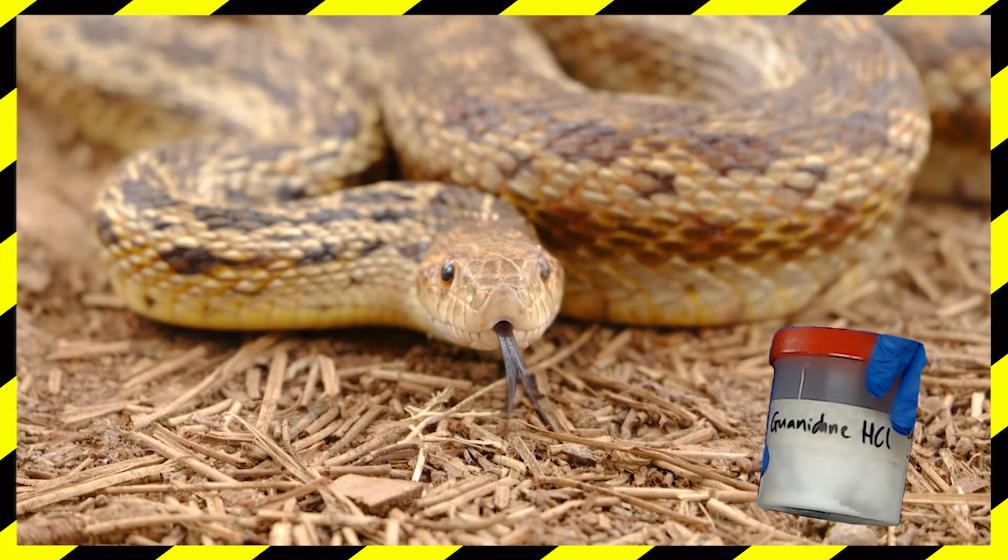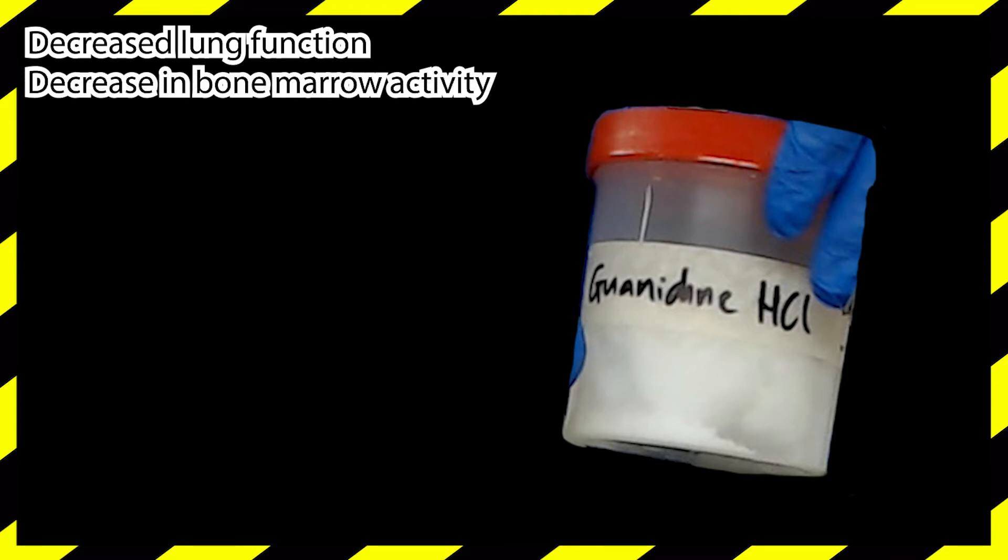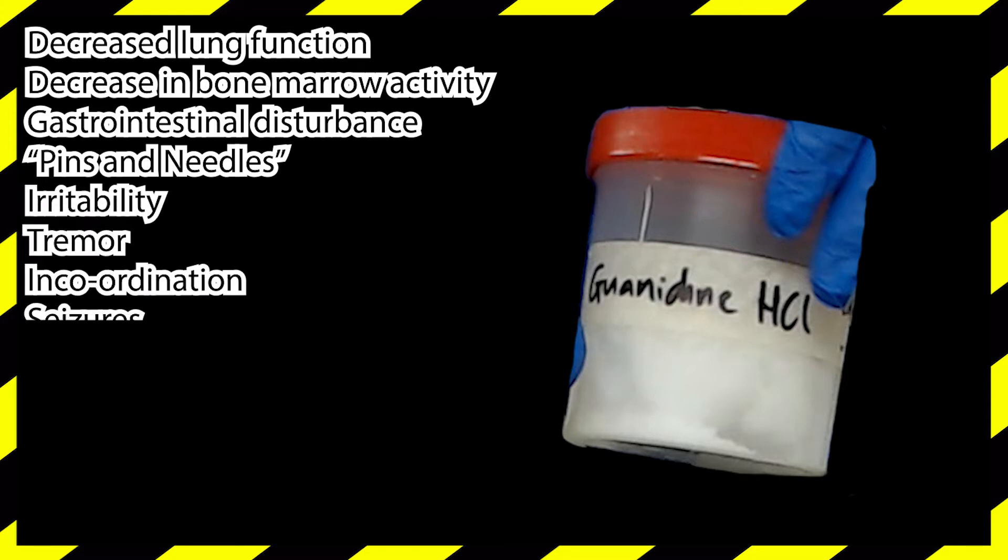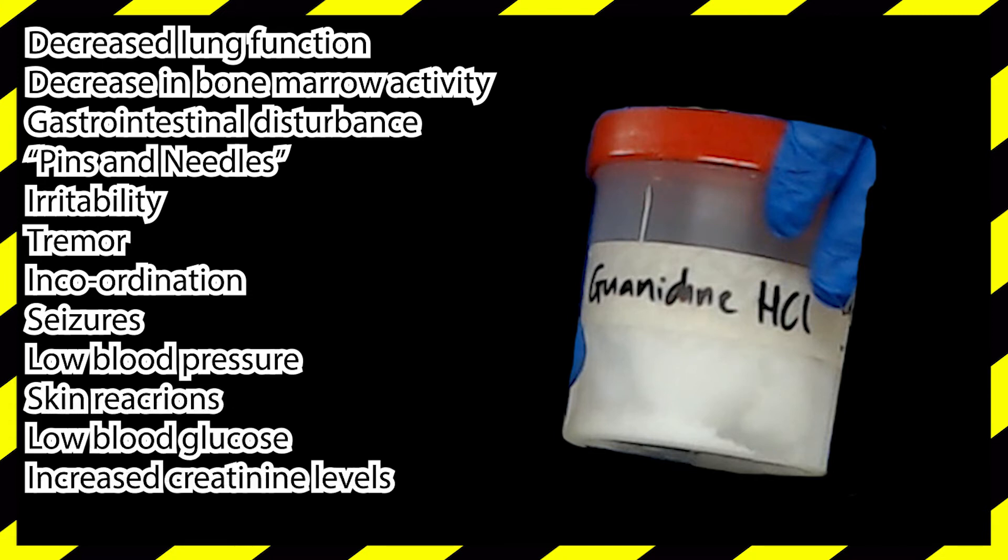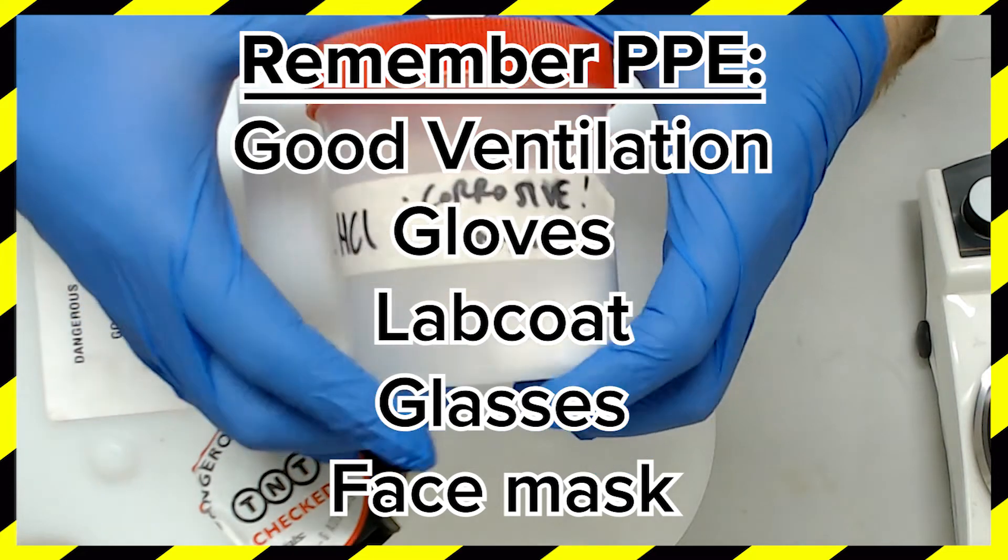I'm not going to repeat my rant from the last video about how truly nasty guanidine hydrochloride is, so let's focus on the long-term health effects of exposure instead. Decreased lung function? Okay, that's not good, but let's check out the next sentence from the MSDS. Guanidine hydrochloride causes decrease in bone marrow activity, usually shown as gastrointestinal disturbance and pins and needles in the lips, face and extremities. Irritability, tremor, incoordination and seizures can occur. Rarely there is low blood pressure, skin reactions, low blood glucose and increased levels of creatinine. Chronic exposure may cause kidney damage. Hey, are you still there or have I scared you away? Put your PPE on and get to work. Use proper safety, unless you want to be a martyr to science like our blessed Marie.